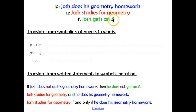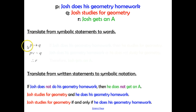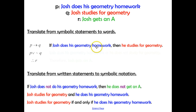Let's translate statements from symbolic to words and from written statements to symbolic notation. Statement P is 'Josh does his geometry homework,' statement Q is 'Josh studies for geometry,' and statement R is 'Josh gets an A.' The symbolic notation P→Q translates as: 'If Josh does his geometry homework, then he studies for geometry.' Whenever you see that arrow, there's an if in front of the first statement.